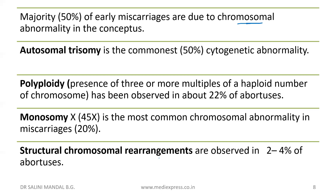So these are the genetic factors leading to abortion: autosomal trisomy; polyploidy — 3N giving 69 chromosomes, or 4N giving 92 chromosomes; monosomy X as the most common chromosomal abnormality; and structural rearrangements such as translocation, deletion, inversion, and ring formation.